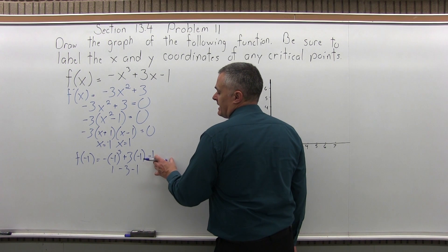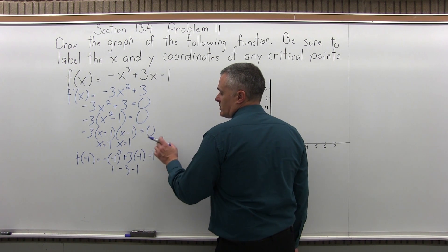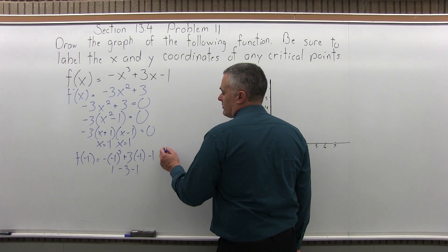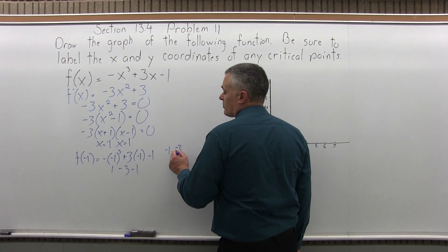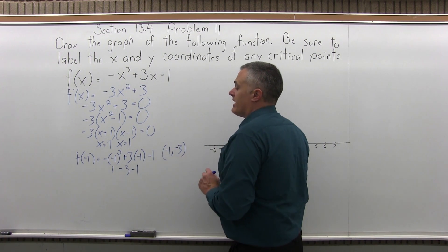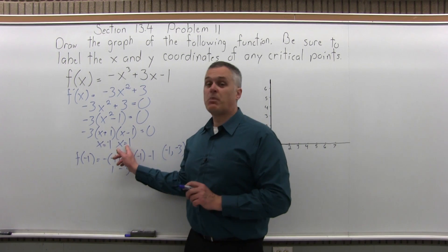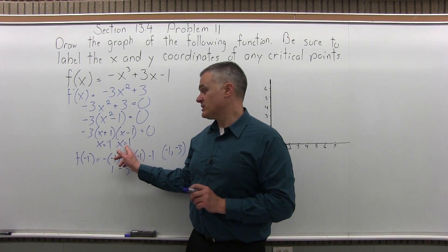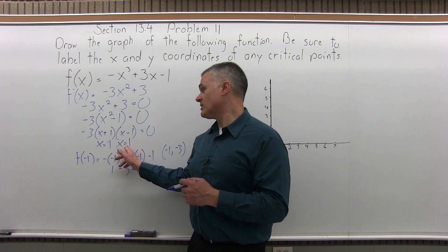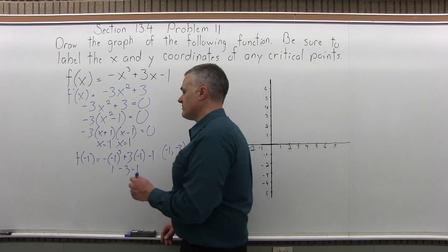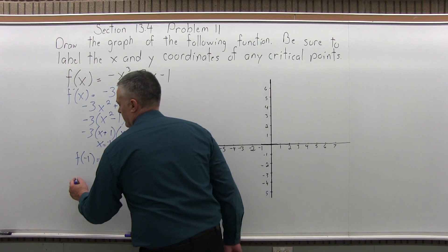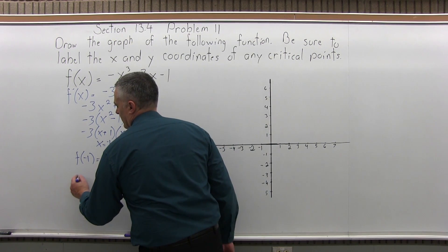So I'm going to have two critical values — two spots with a horizontal tangent line. What we have to do now is find the height of each one. Find the height when x is minus 1, and find the height when x is positive 1.